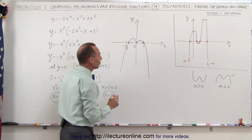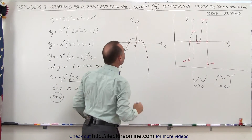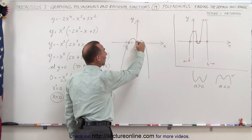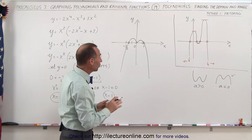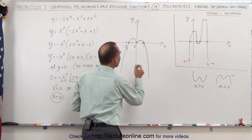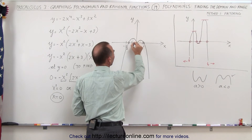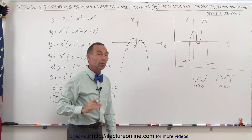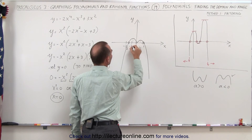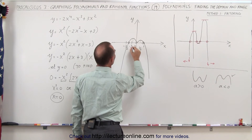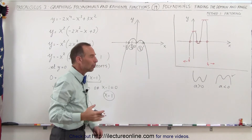We can see that the range has no limit in the negative direction, the domain has no limit in any direction, and the range does have a limit in the positive direction. The only thing left is to find how high the graph goes. Without calculus we can approximate it algebraically: we assume the highest point between 0 and 1 is near the halfway point at x equals 1/2, and the highest point between 0 and negative 3/2 is near the halfway point at x equals negative 3/4. We'll evaluate the original function at both locations and see which gives the higher value.